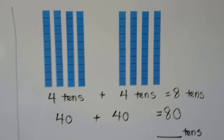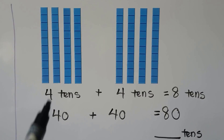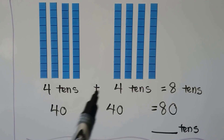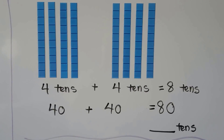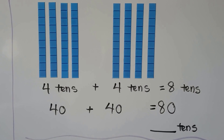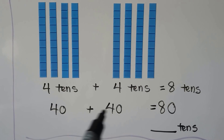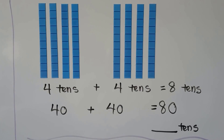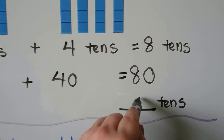Here we have four tens plus four tens. Four plus four is eight, so four tens plus four tens is equal to eight tens. Forty plus forty is equal to eighty. Eighty is eight tens.